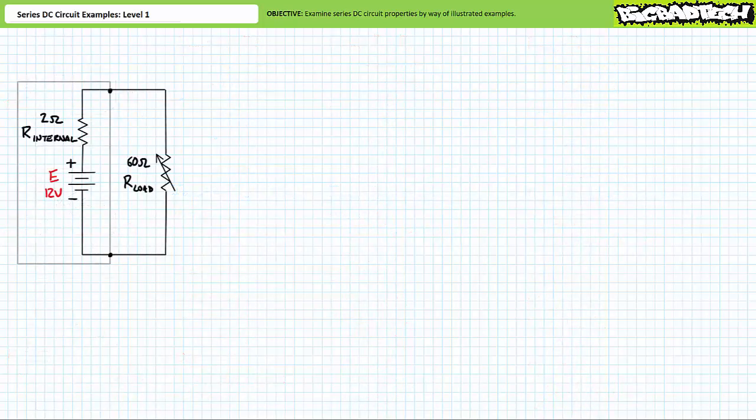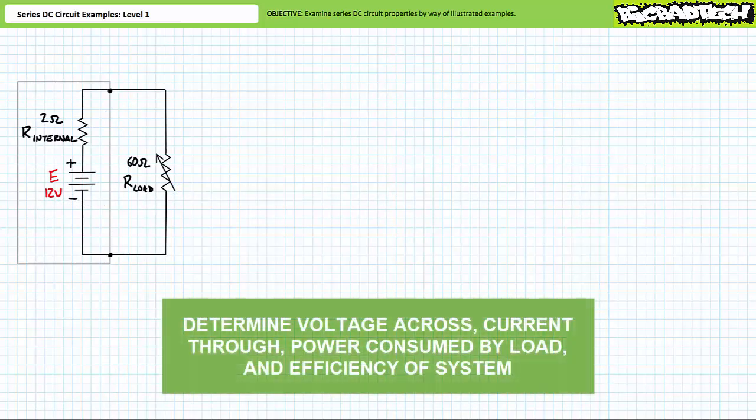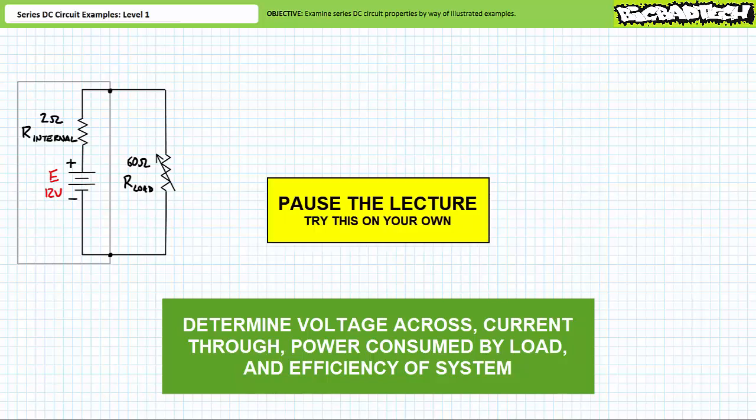Our next illustrated example features a 12 volt battery with 2 ohms of internal resistance being asked to supply power to an electrical load modeled as a 60 ohm resistor. We're being asked to solve for the voltage drop across the load, the current through the load, the power dissipated by the load, the total power, and the efficiency — where power delivered to the load is considered useful output and any power dissipated by the internal resistance is considered a loss. By all means pause the lecture and try this on your own. If you're tracking, you should have obtained the following results.